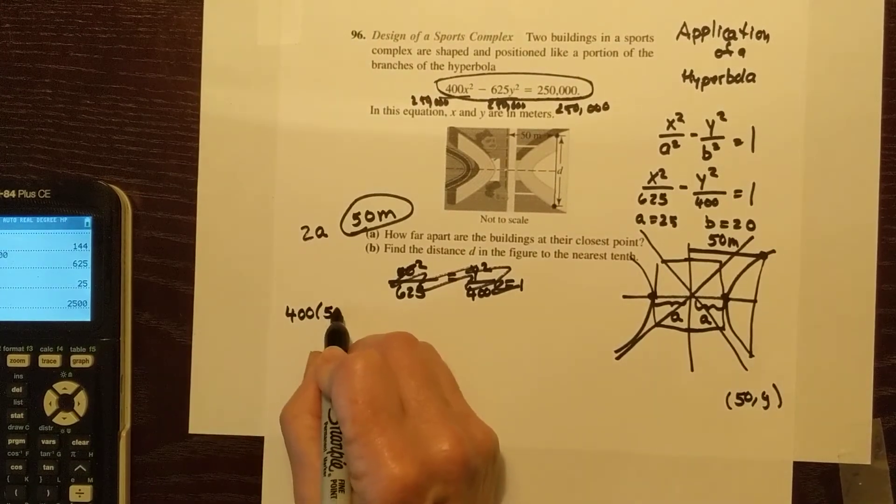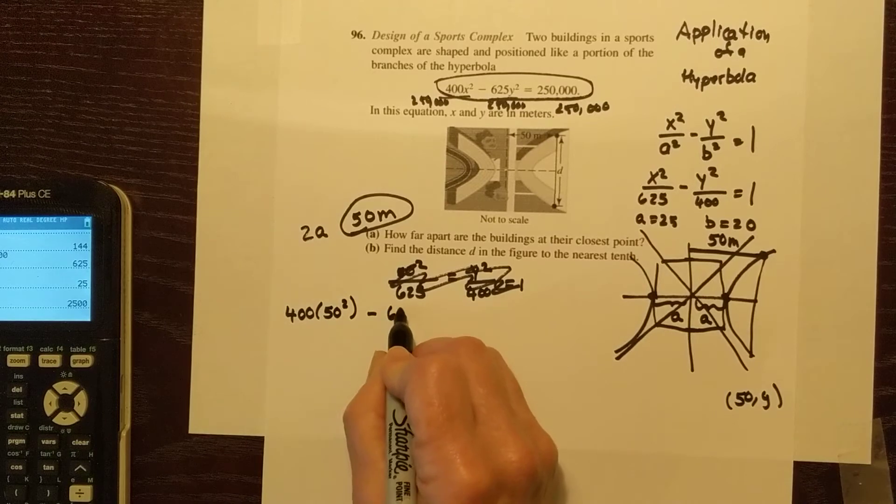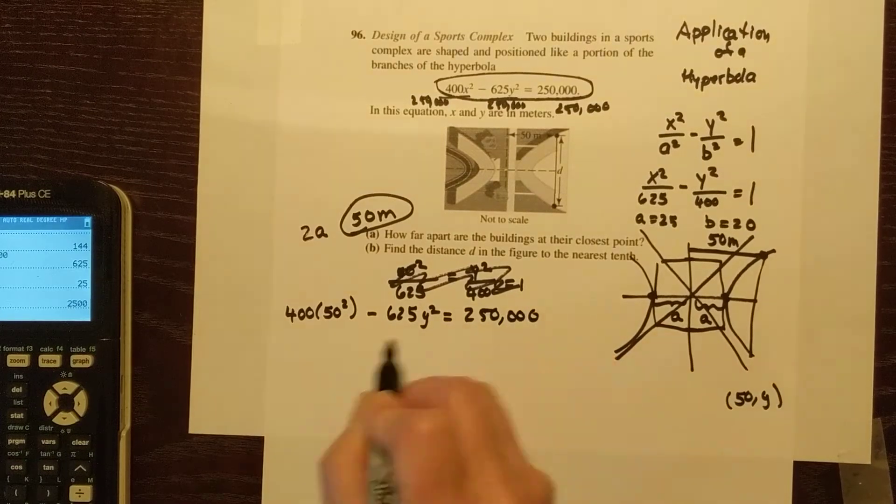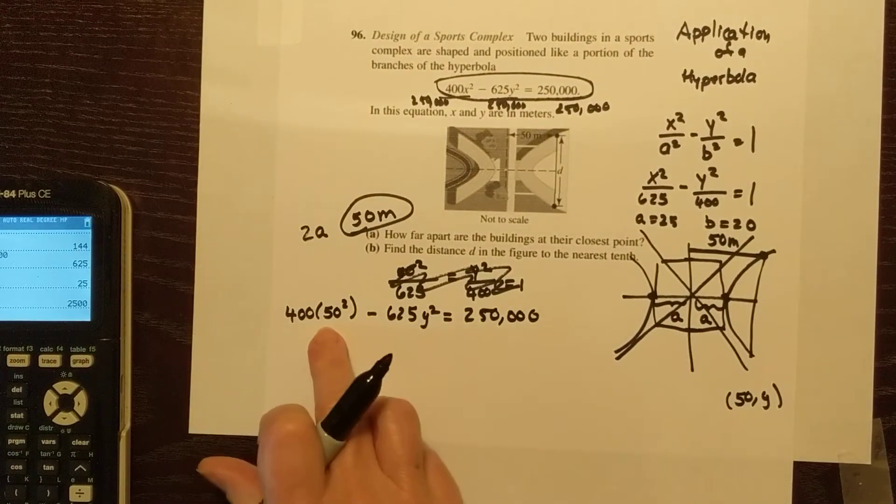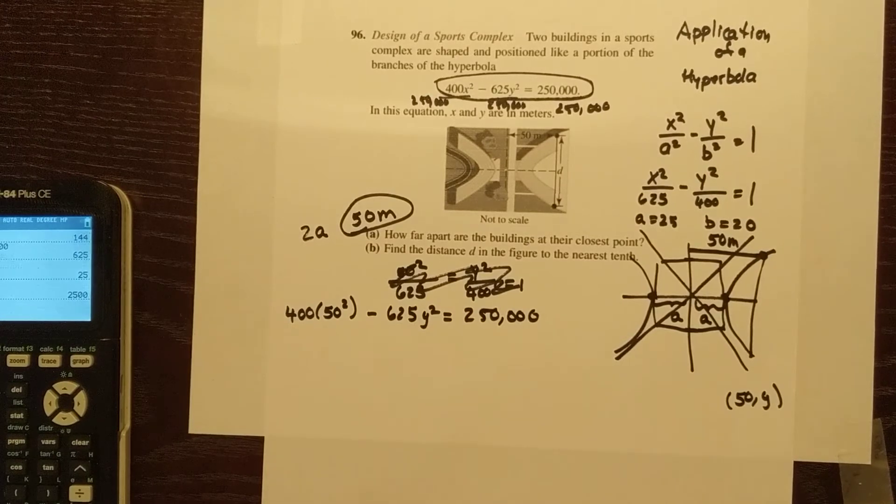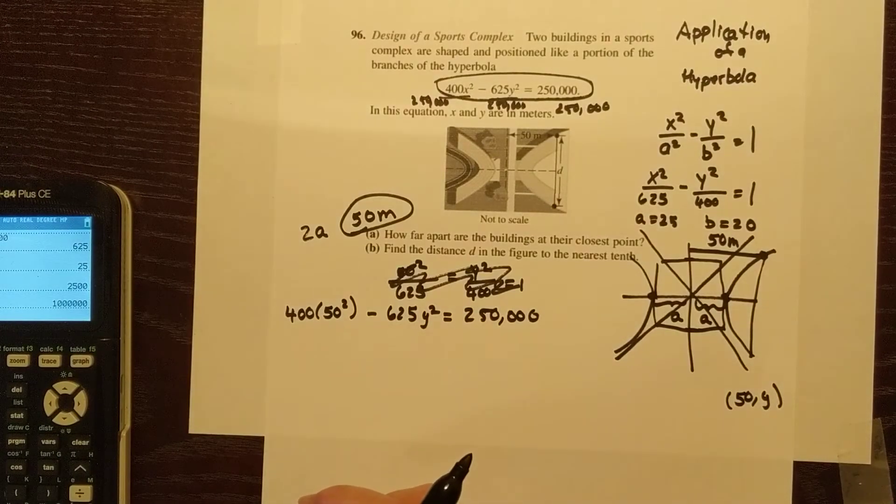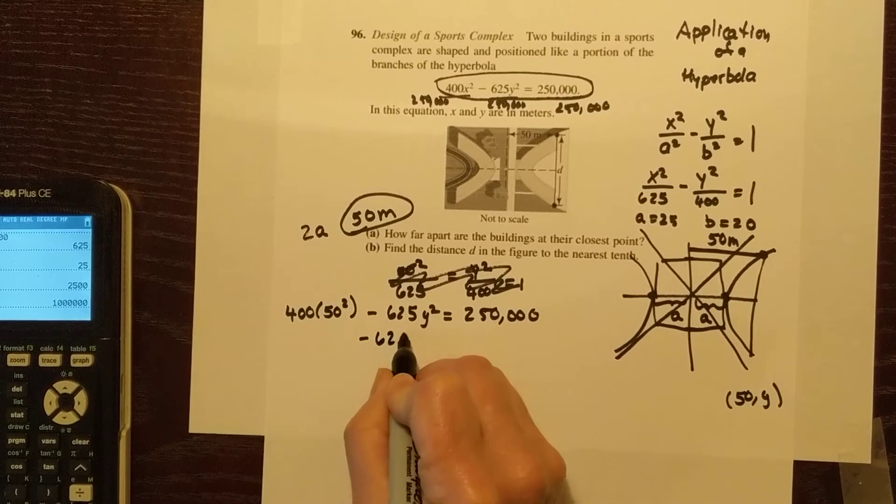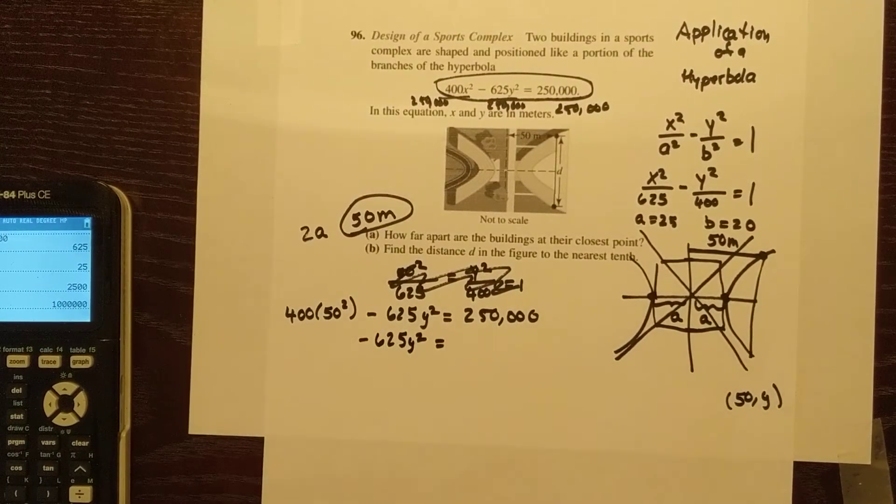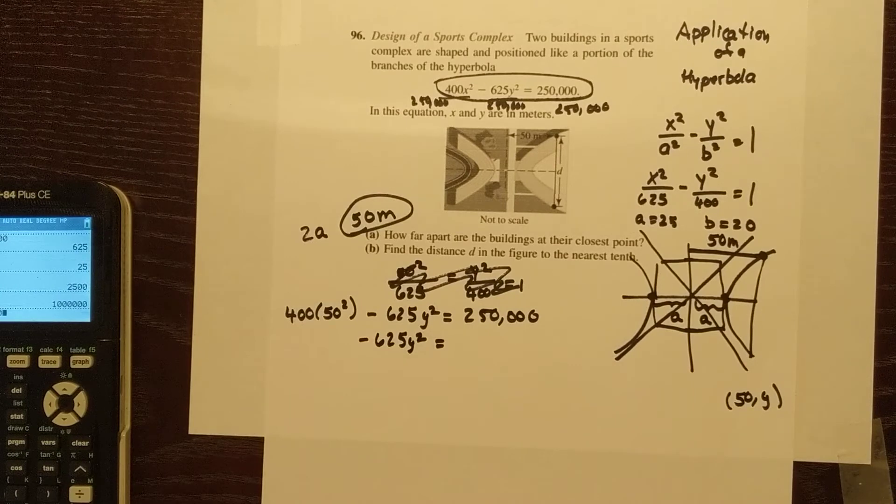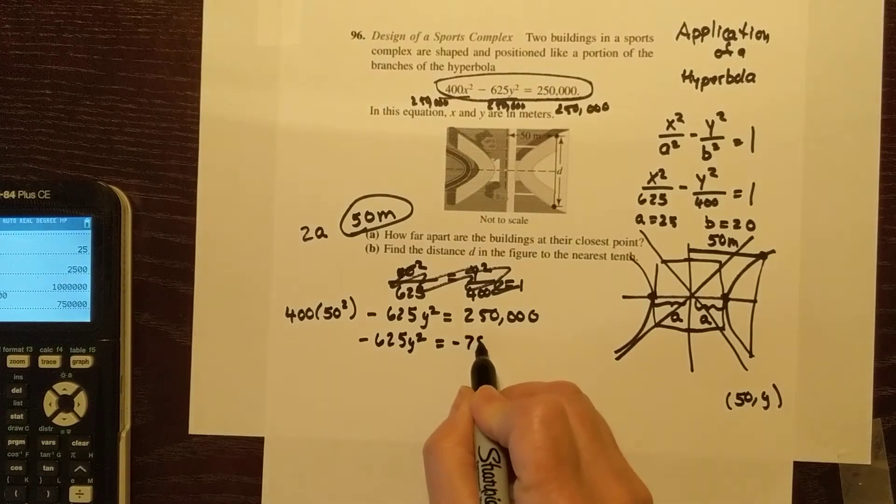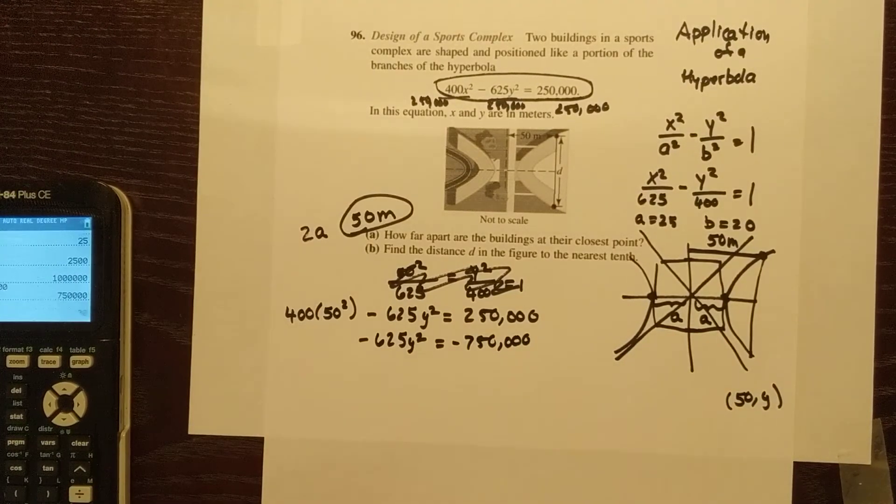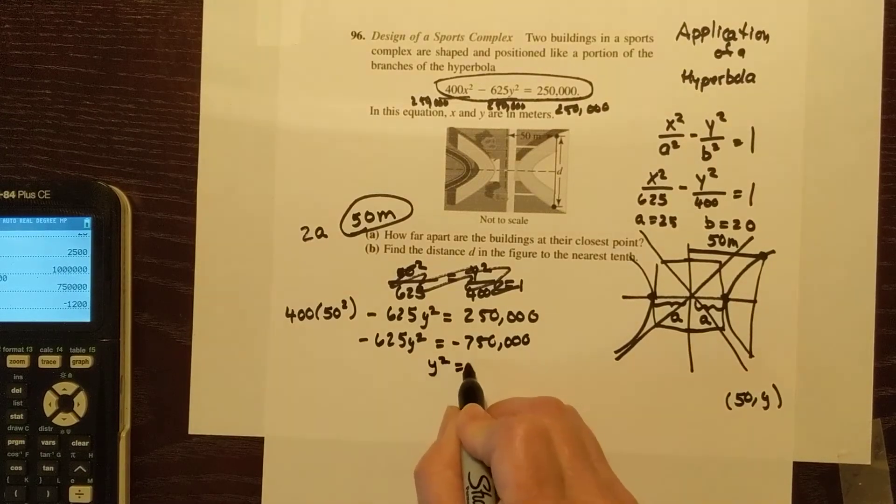I'm going to solve for y squared. So let's see, 50 squared times 400 is, let's see, that is 1, 2, 3, it looks like it's a million. So I'm going to subtract that over here, so negative 625 y squared gives me negative 750,000. And then I'm going to divide both sides by 625 and I get y squared is 1200.